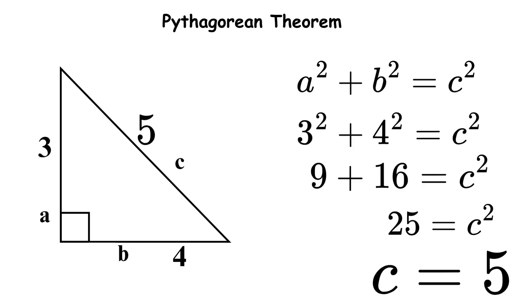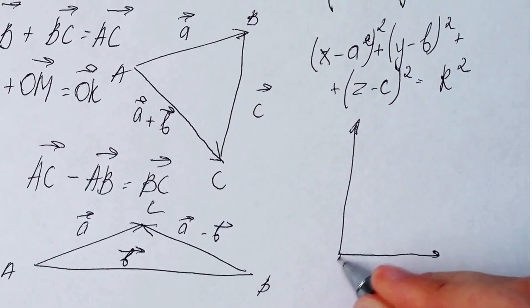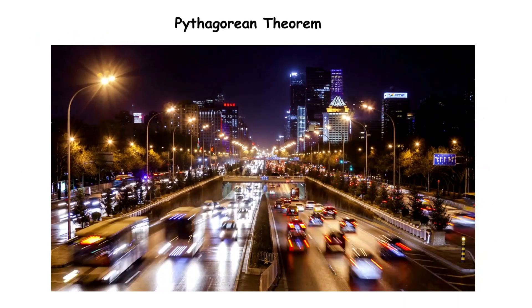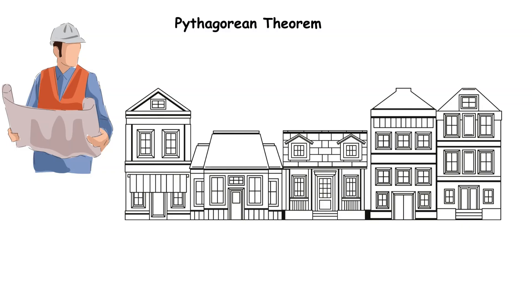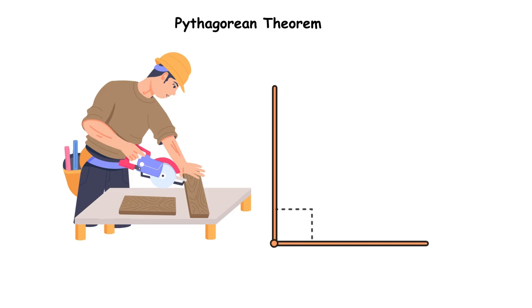This theorem revolutionized mathematics because it was one of the first to show that geometric shapes follow precise mathematical rules. Today, the Pythagorean theorem is everywhere. Architects use it to ensure buildings are square. GPS systems use it to calculate distances. And carpenters use it to create perfect right angles.